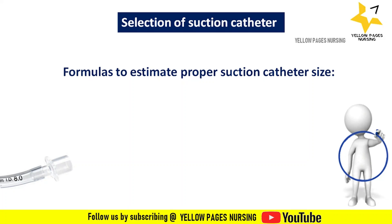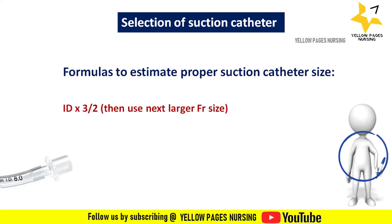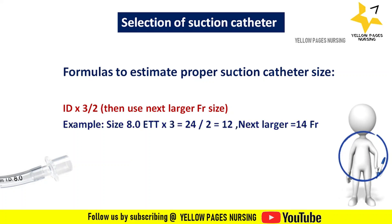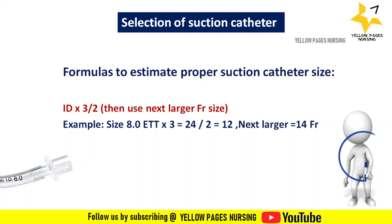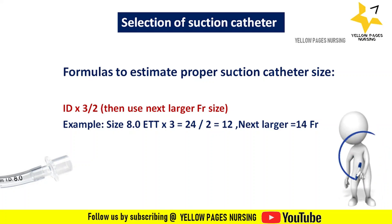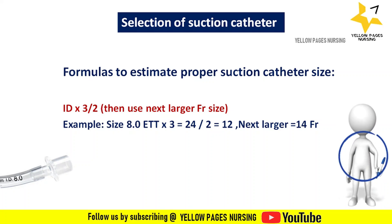Formula one: internal diameter × 3 ÷ 2, then use the next larger French size. For example, if the ET tube internal diameter is 8: 8 × 3 = 24, divided by 2 = 12. We then use the next larger size, which is 14 French.